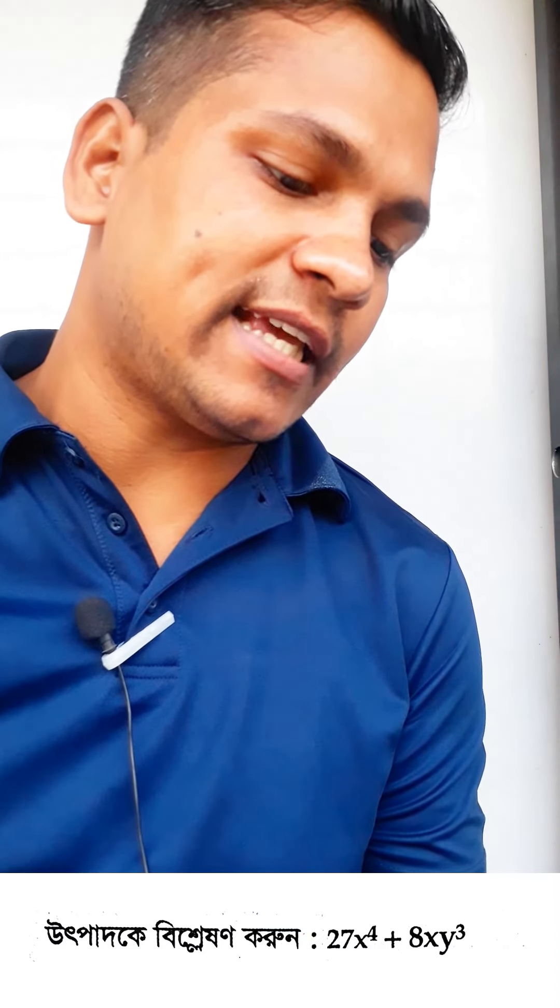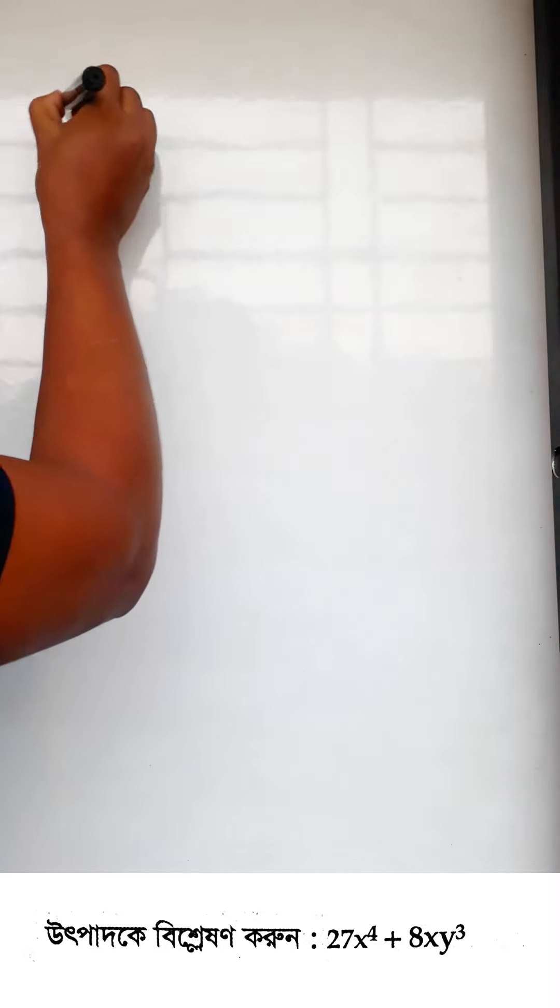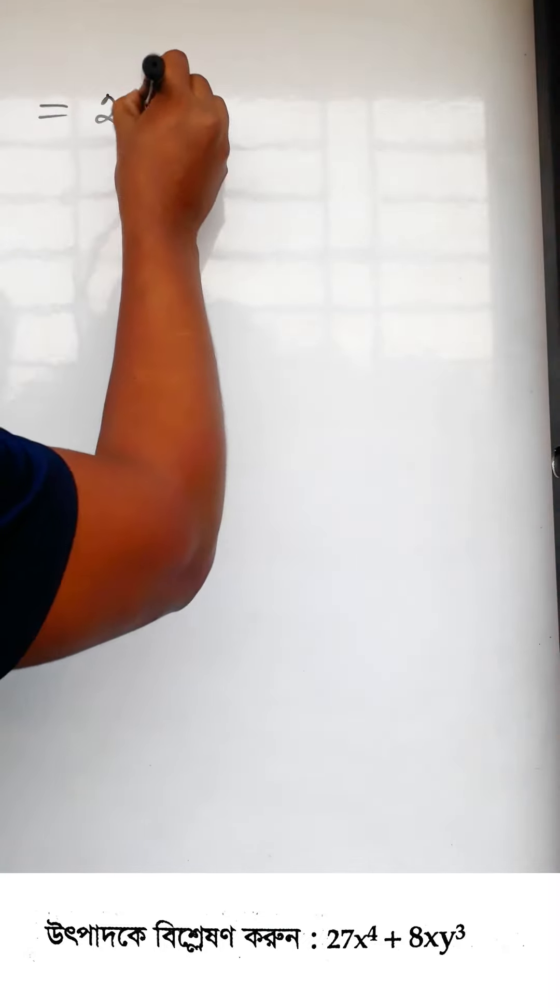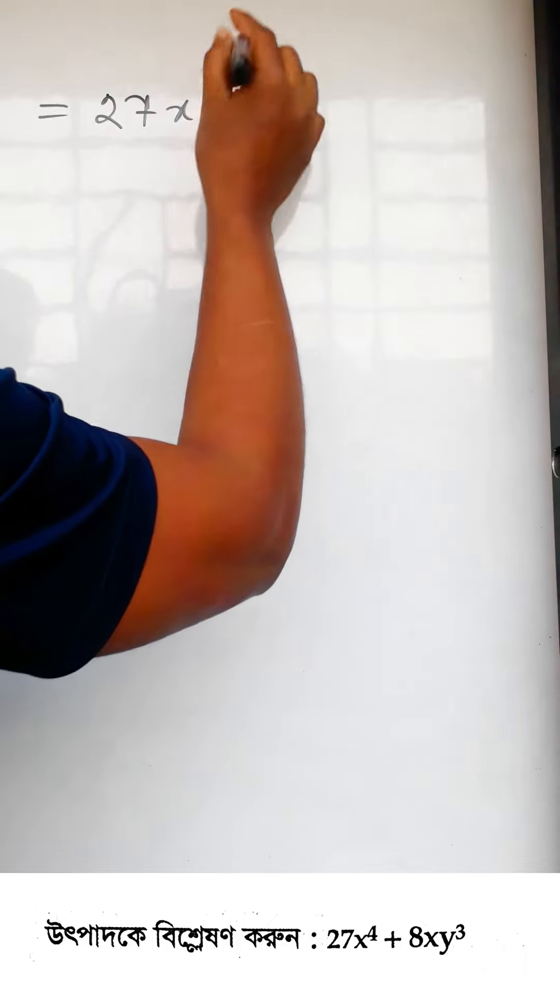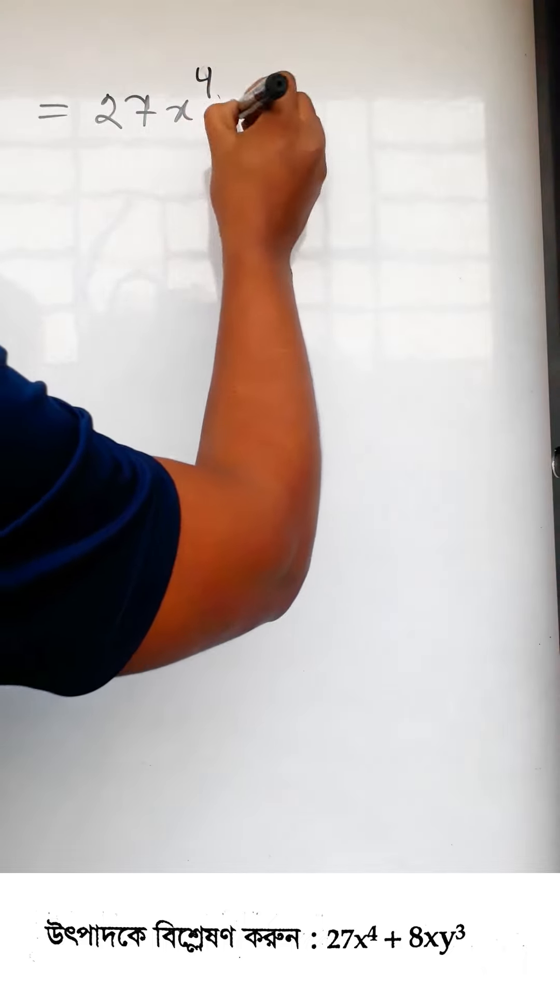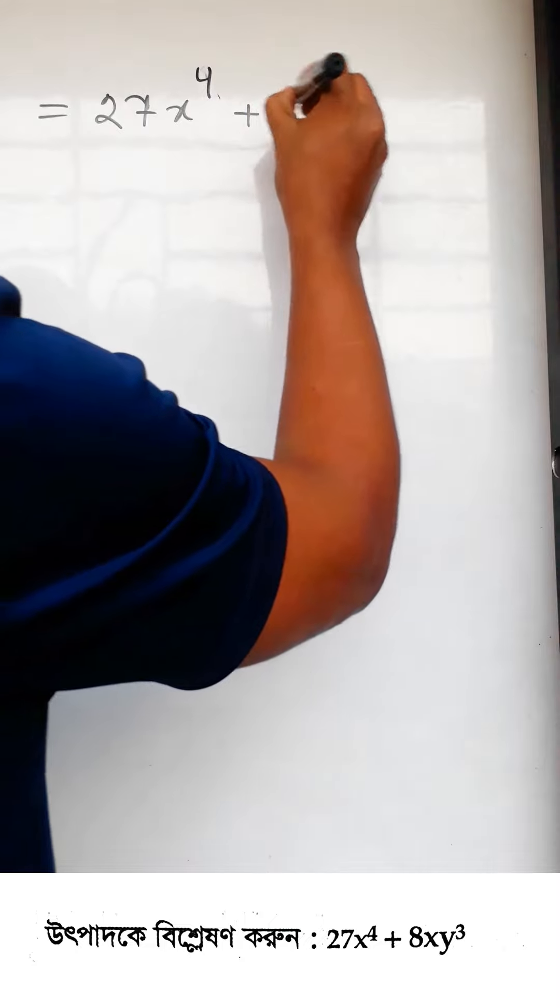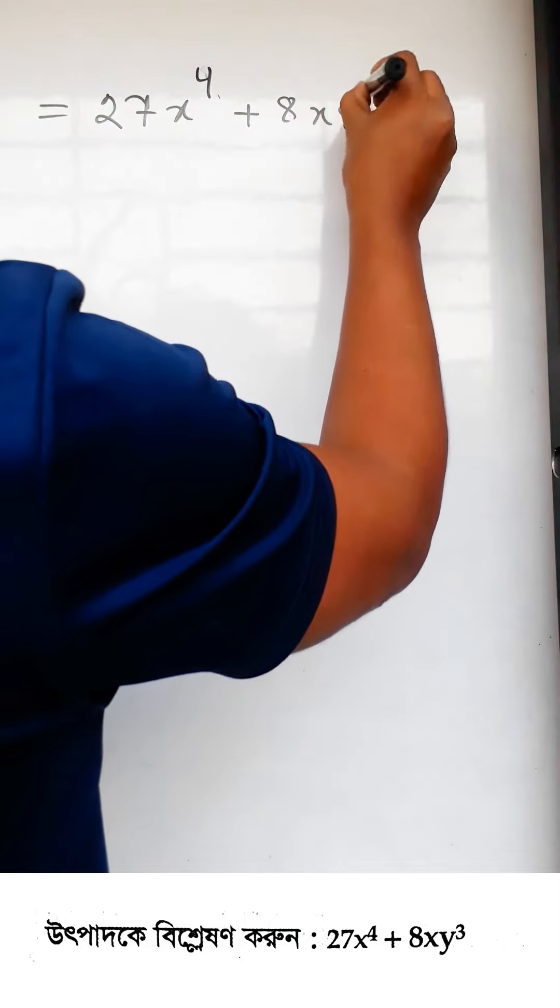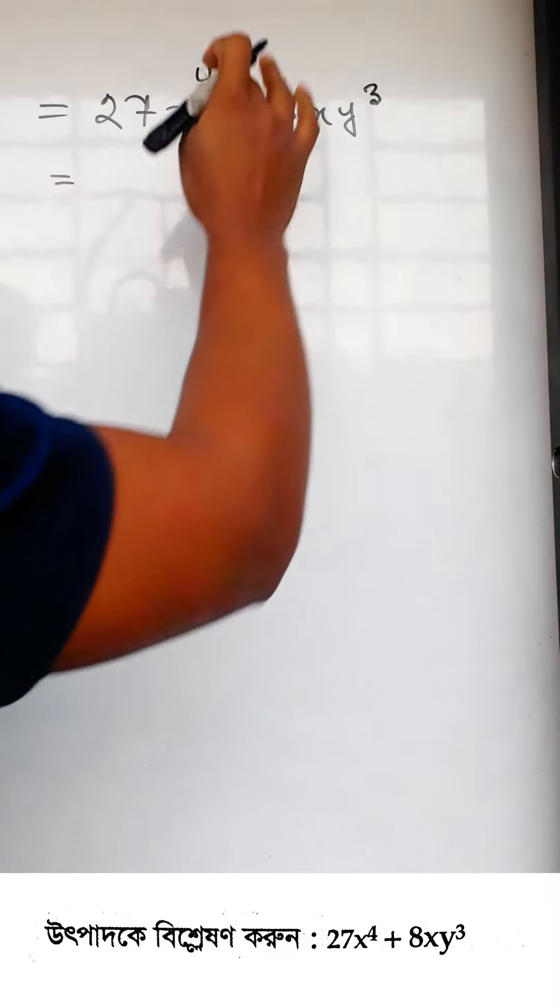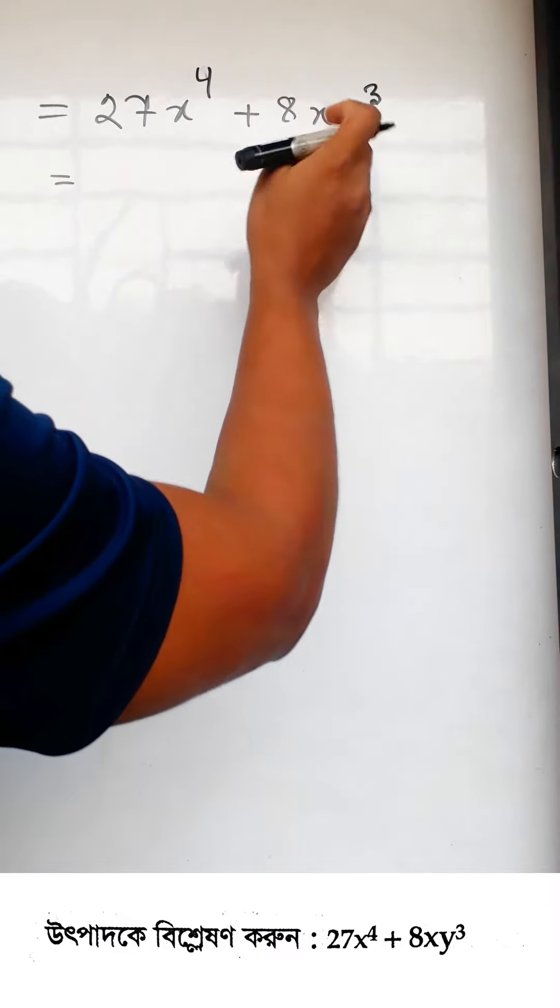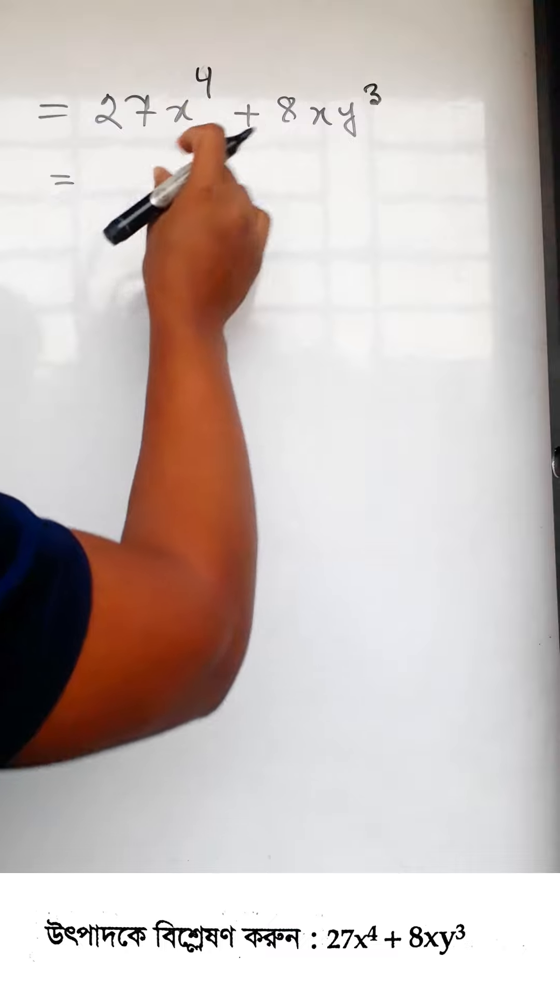The problem we need to solve is: 27x to the power 4 plus 8xy to the power cube. Let me write this out clearly: 27x^4 + 8xy^3. Now let's work through the solution step by step.